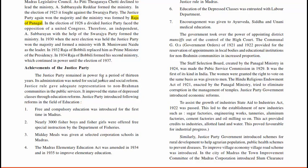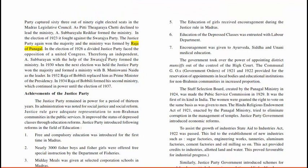The achievements of the Justice Party are notable. The Justice Party remained in power for a period of 13 years, and its administration was noted for social justice and social reforms. Justice rule gave adequate representation to non-Brahmin communities in public services and improved the status of depressed classes through education reforms. Free and compulsory education was introduced for the first time in Madras. Nearly 3,000 fisher boys and girls were offered free special instruction by the Department of Fisheries. Midday meals were given at selected corporation schools in Madras.